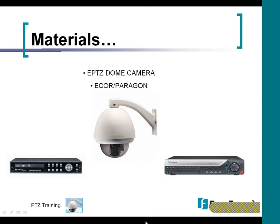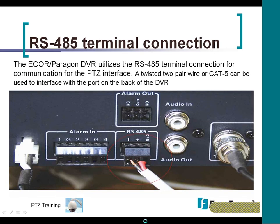The materials you'll be seeing include the ECOR and the Paragon back panel, along with the PTZ dome camera. The 485 terminal connection is used for the communication for the PTZ interface. A twisted pair of wire or CAT5 can be used to interface with the port on the back of the DVR — this is different than the EDR and EDVR series. You're using a simple screw terminal with self-explanatory positive and negative connections.